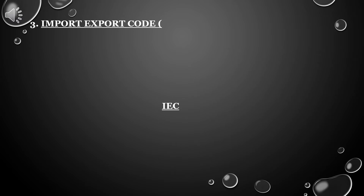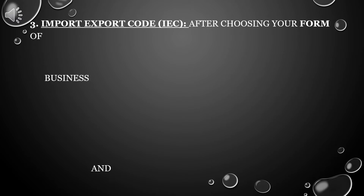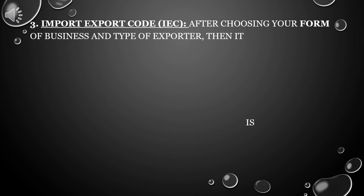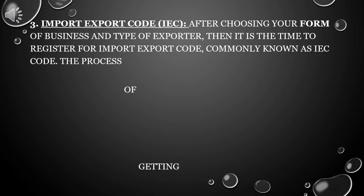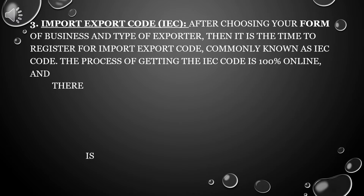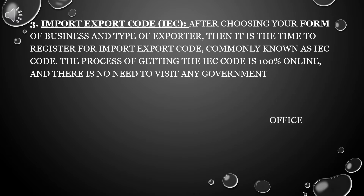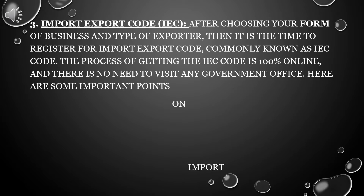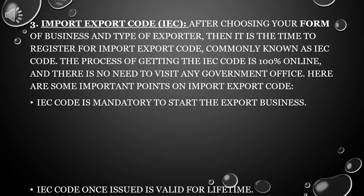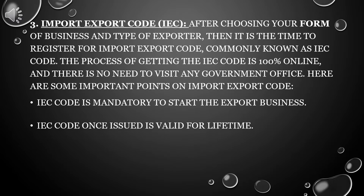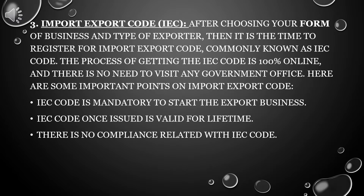Third, Import Export Code (IEC). After choosing your form of business and type of exporter, it is time to register for Import Export Code, commonly known as IEC. The process of getting the Import Export Code is 100% online, and there is no need to visit any government office. Here are some important points: Import Export Code is mandatory to start the export business. Import Export Code once issued is valid for lifetime. There is no compliance related with Import Export Code.